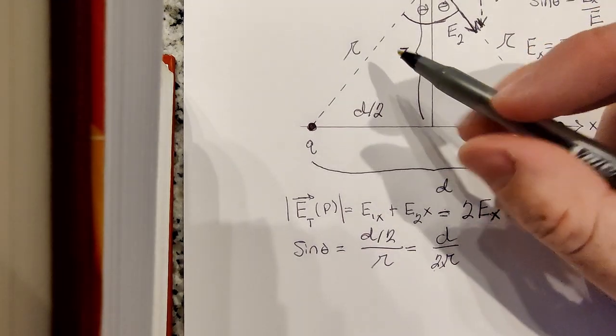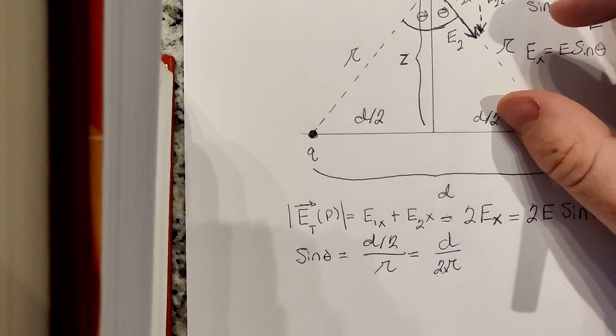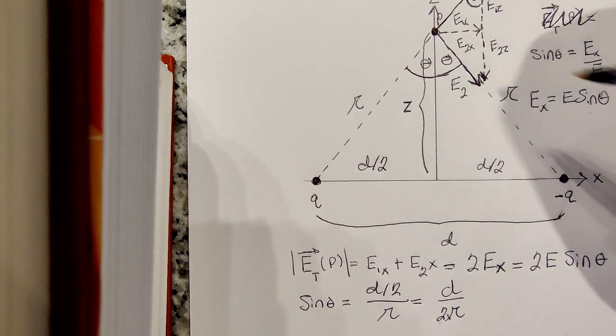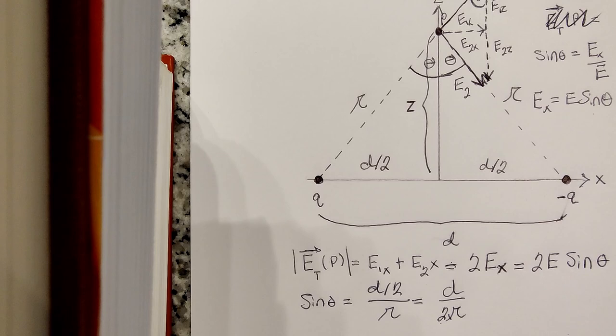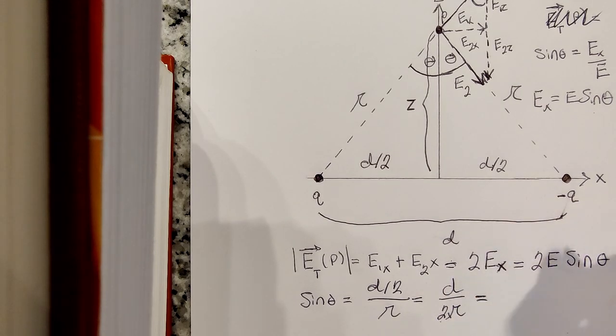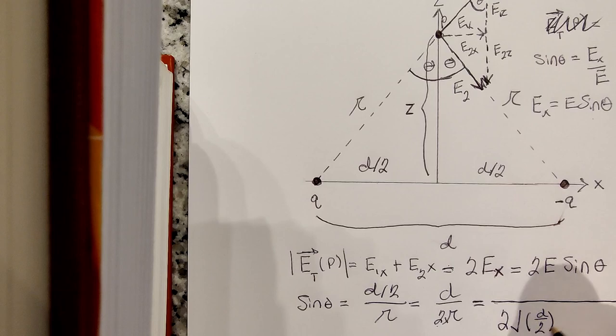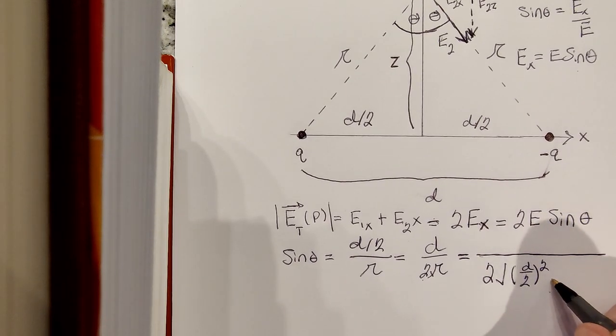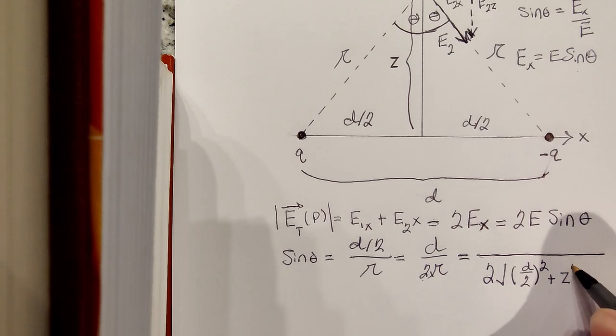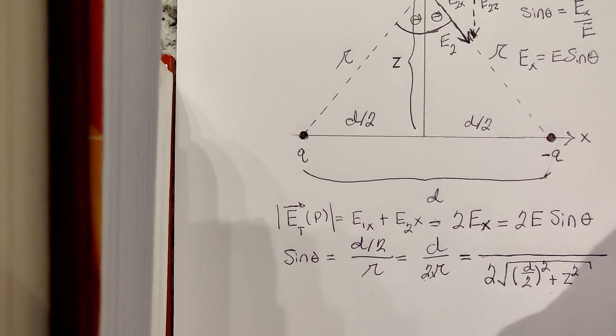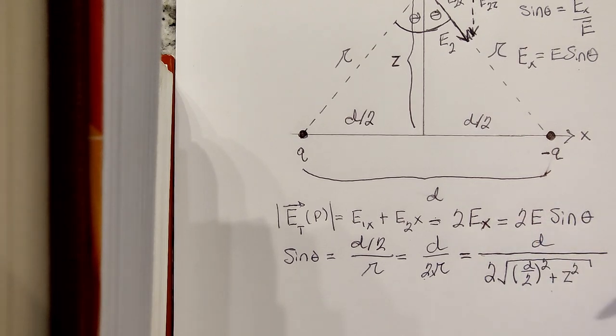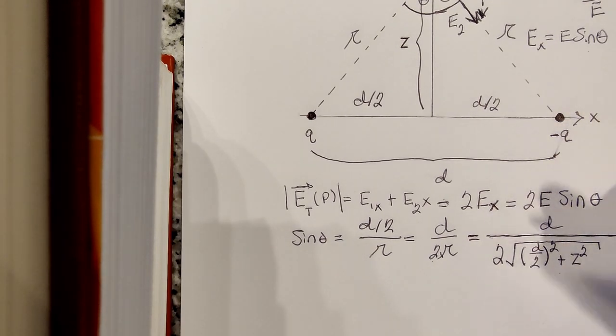And what is script r? Well, script r is just using Pythagorean's theorem, so script r squared is equal to d over 2 squared plus z squared. So script r is just the square root of d over 2 squared plus z squared. And then we have d on top. So that is sine of theta.